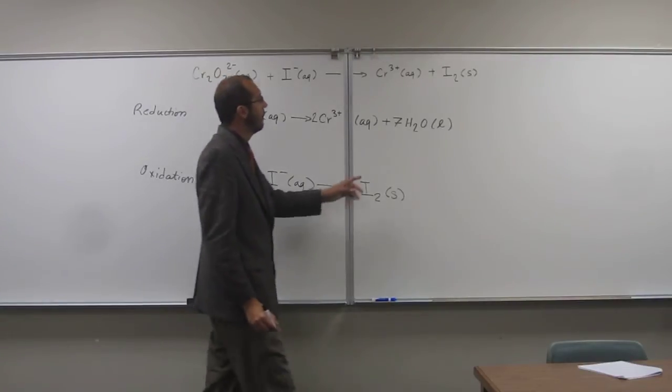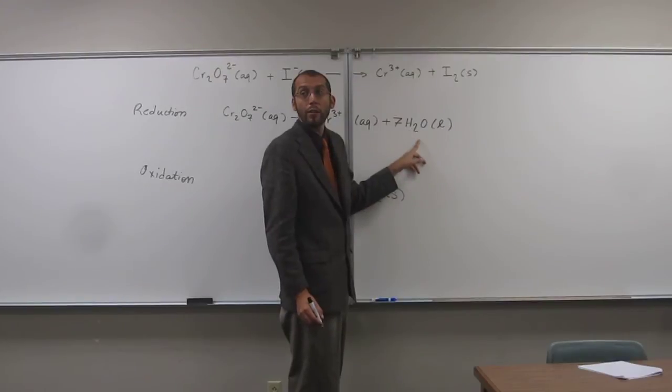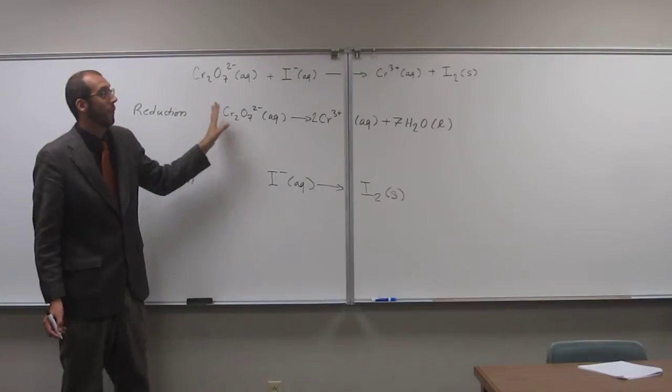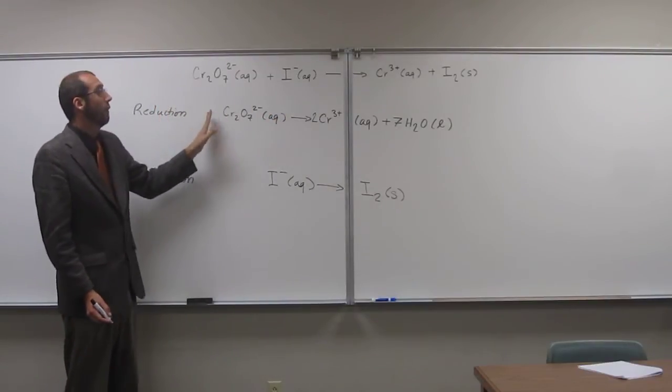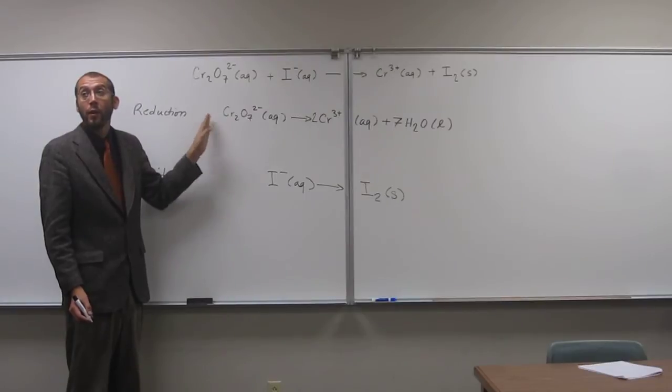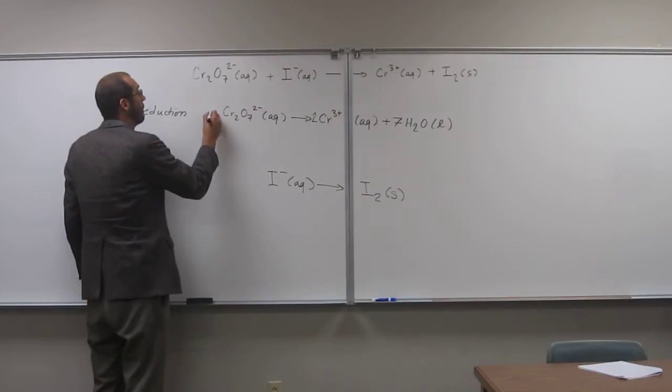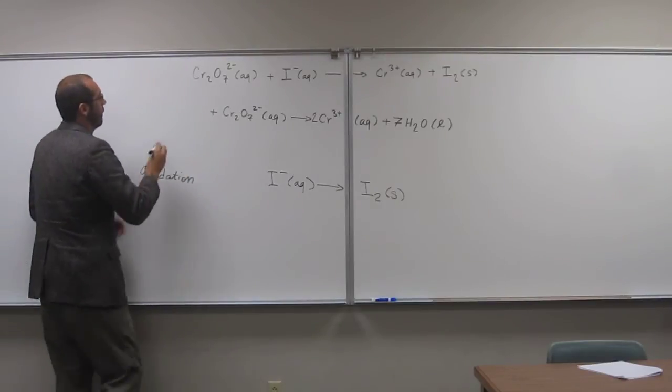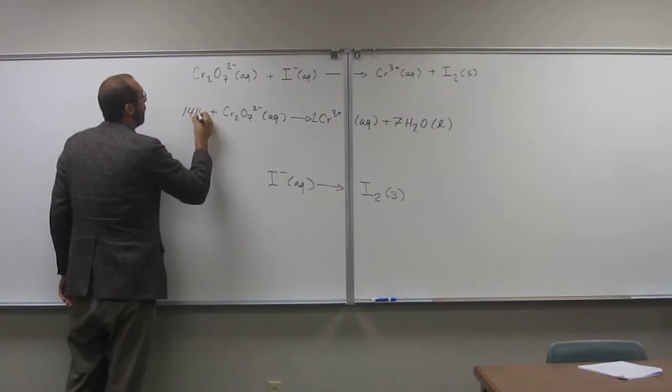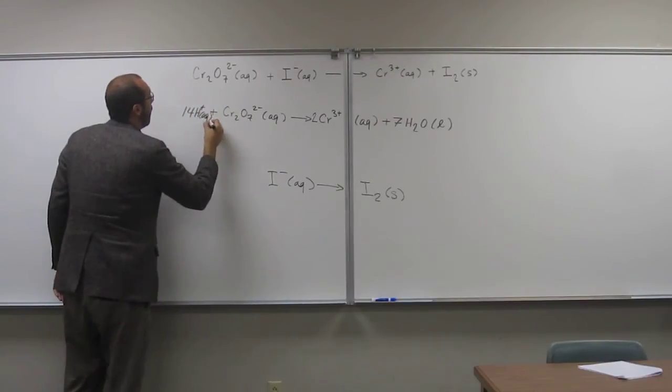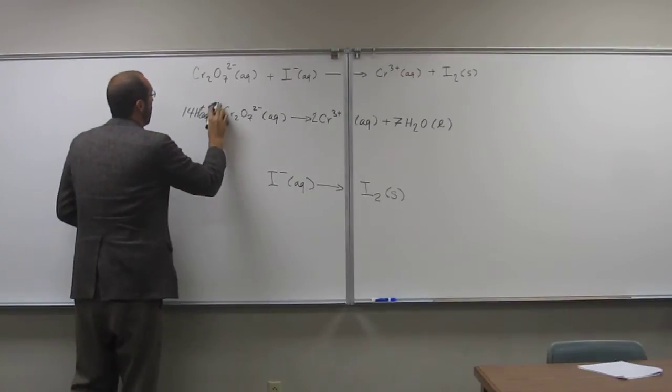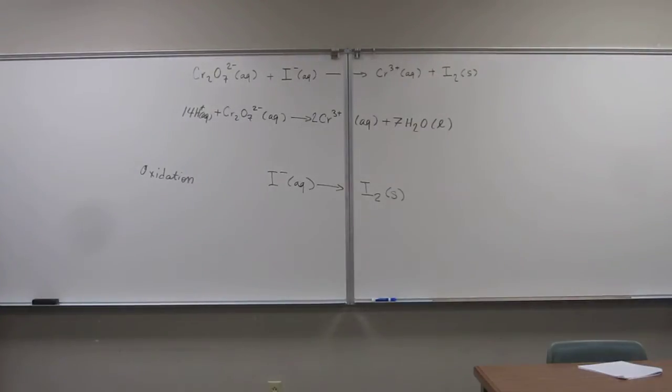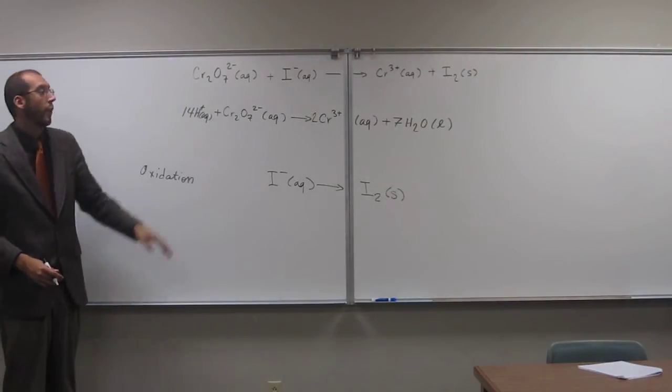So now, when we look at this, we've got two hydrogens times seven, but we've got no hydrogens over here. So there's 14 over there, none over here. We balance that by adding protons. So there's going to be 14 protons over here. So there you go. OK, good.